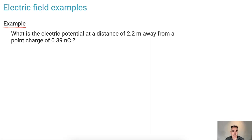So let's do some examples with electric fields. First of all, what's the electric potential at a distance 2.2 meters away from a point charge of 0.39 nanocoulombs? Watch out for that one. First things first, I think it's important to know what it is that we're looking for. So electric potential, what we really want is VE.